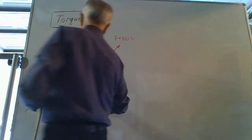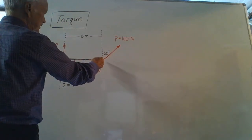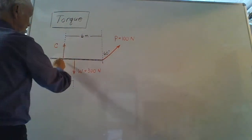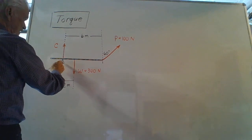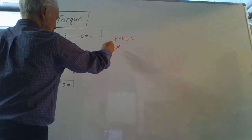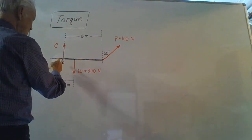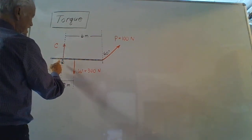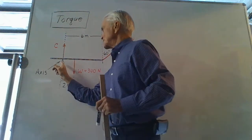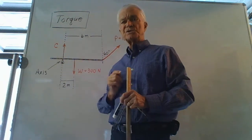The pulling force is applied to a point that's 6 meters from the fulcrum. The final force is a contact force exerted upward by the fulcrum, of unknown value C.